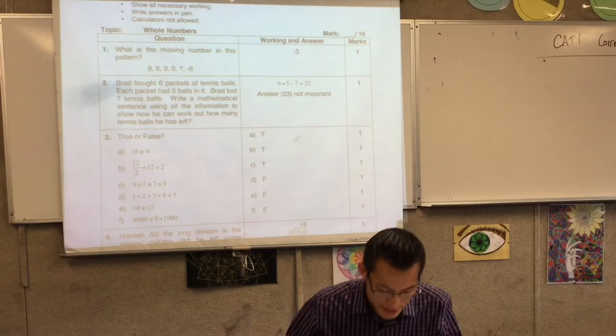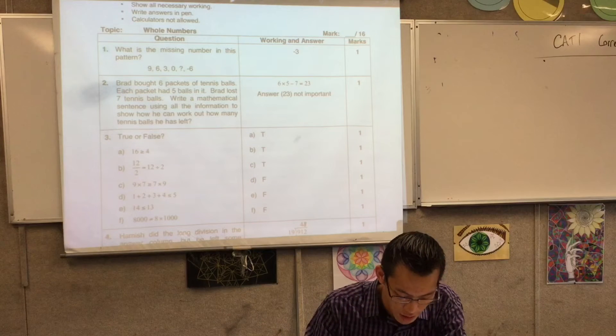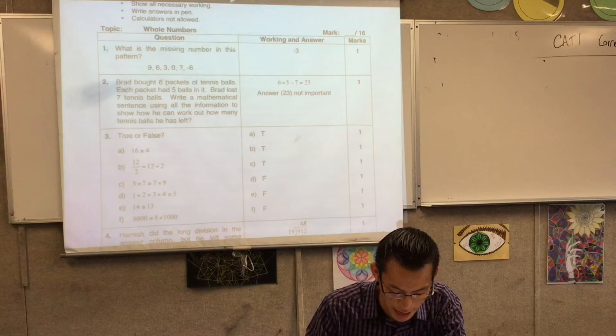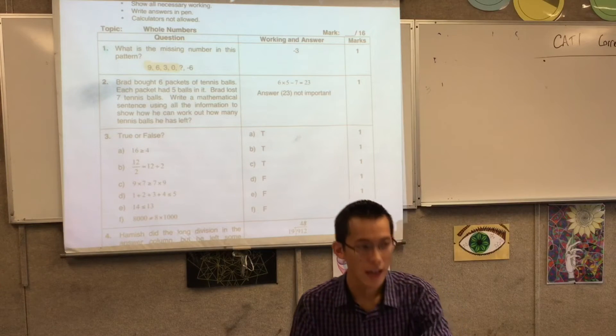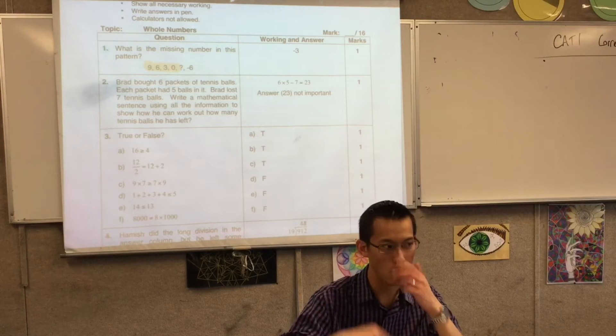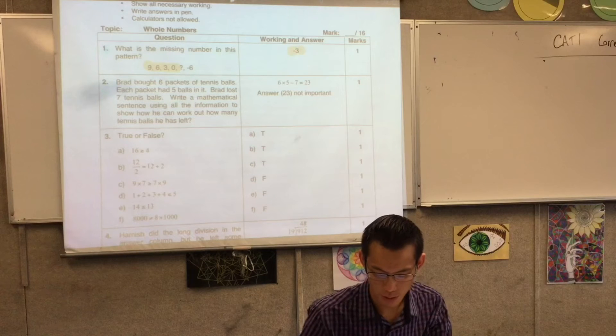Question 1. What's the missing number in this pattern? You can see if you follow all of these numbers on the left hand side, these guys here, they are always decreasing by 3 as you move from left to right. So if you decrease by 3 one more time, that's what gives you negative 3.